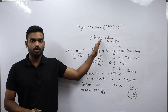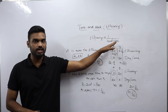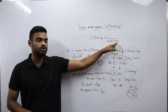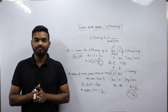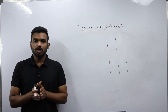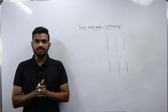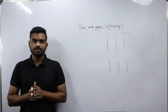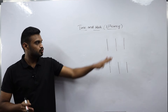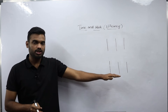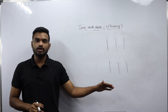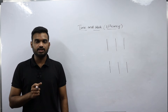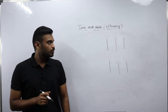Now let's see how to write efficiencies when given in the form of percentages. I will consider two examples and show how to write efficiencies in percentage form.